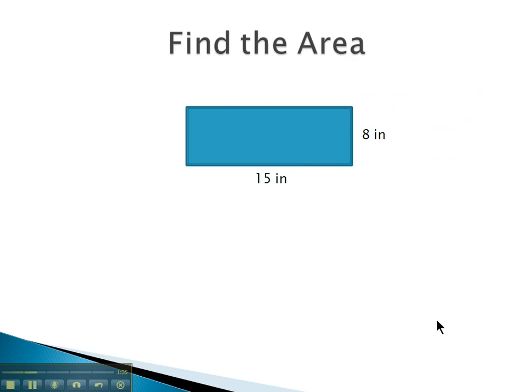So for example, if we wanted to find the area of this rectangle here, we simply have to multiply. It's a rectangle, length times width. The width we see is this 8 inches up here, and we've got a length of 15.